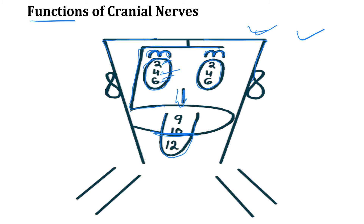Now cranial nerve 8, the vestibulocochlear nerve, drawn on the sides of the face like ears. This is a purely sensory cranial nerve, responsible for hearing and balance.